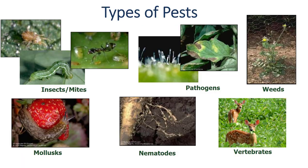Not all organisms found in crops, forests, or landscapes are pests. Many organisms are beneficial. Others are of no consequence to the area being managed. However, a small number of organisms interfere with the availability, quality, or value of a managed resource. These organisms are called pests.